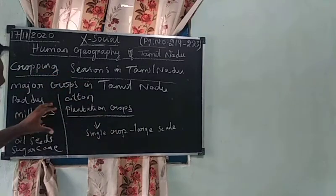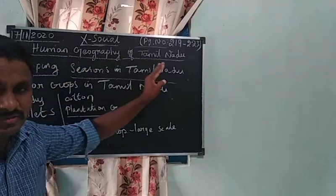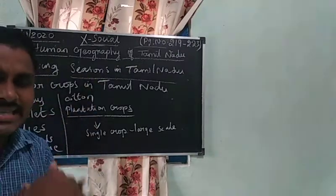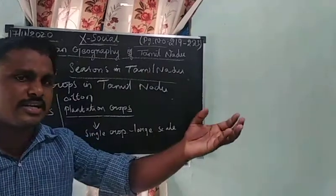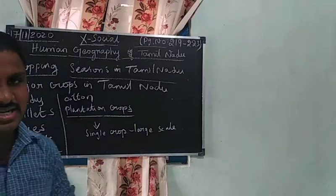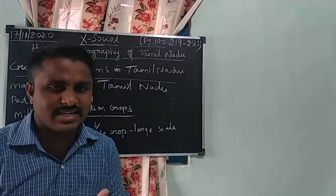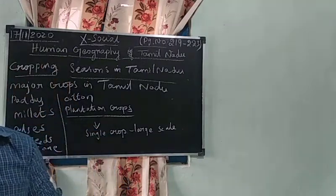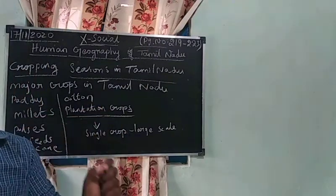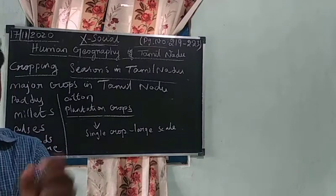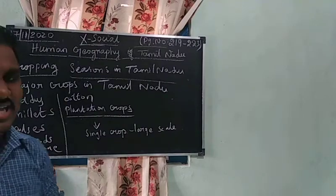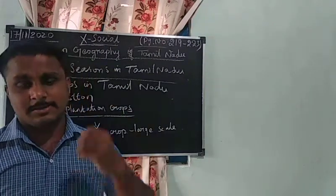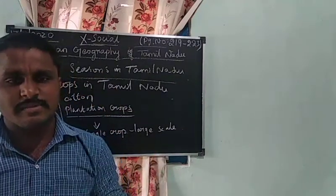This is human geography — showing how crops are cultivated with the help of human beings. Human beings are one of the most important resources on Earth, using their skills to convert natural resources into useful products. Agriculture — before independence, India was an agricultural country. They used different farming methods: subsistence farming, mixed farming, commercial farming, and plantation farming.